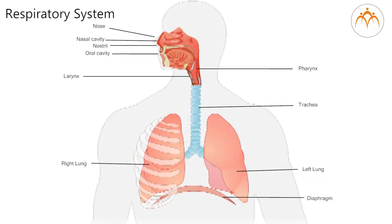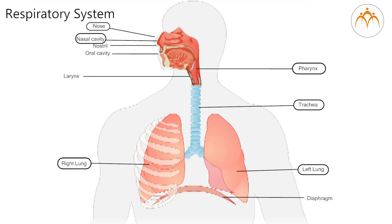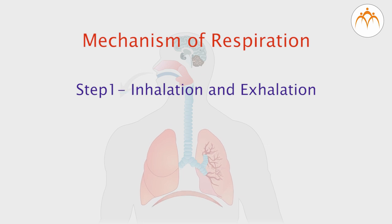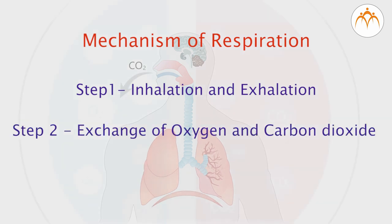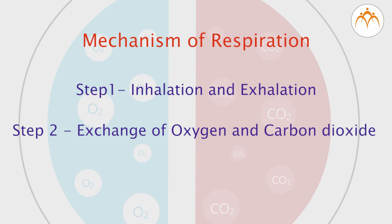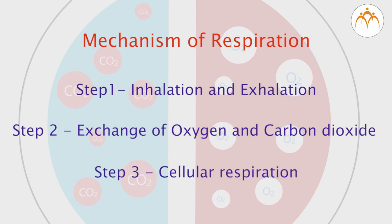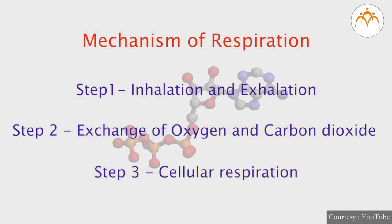To summarize: the human respiratory system consists of organs like nose, pharynx, windpipe or trachea, lungs and diaphragm. Respiration takes place in a stepwise manner. In the first step, oxygen is inhaled into the lungs and carbon dioxide is exhaled out through the nose. The second step involves external and internal respiration - in external respiration oxygen is added to blood in the lungs, and in internal respiration blood supplies oxygen to cells. Finally, in cellular respiration, ATP molecules are produced.